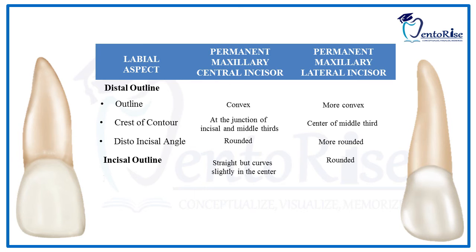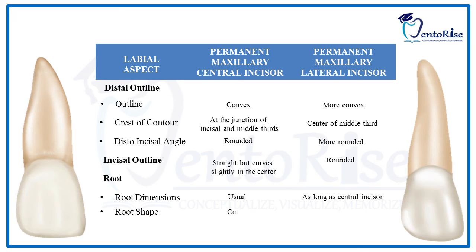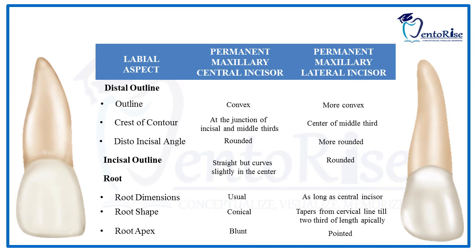Coming to the root dimensions, the root dimensions are similar for both the central and the lateral incisor. However, the root shape is conical in the central incisor, while the root tapers from the cervical line till two-thirds of the length of the root in the lateral incisor. The apex is blunt in the central incisor and pointed in the lateral incisor.